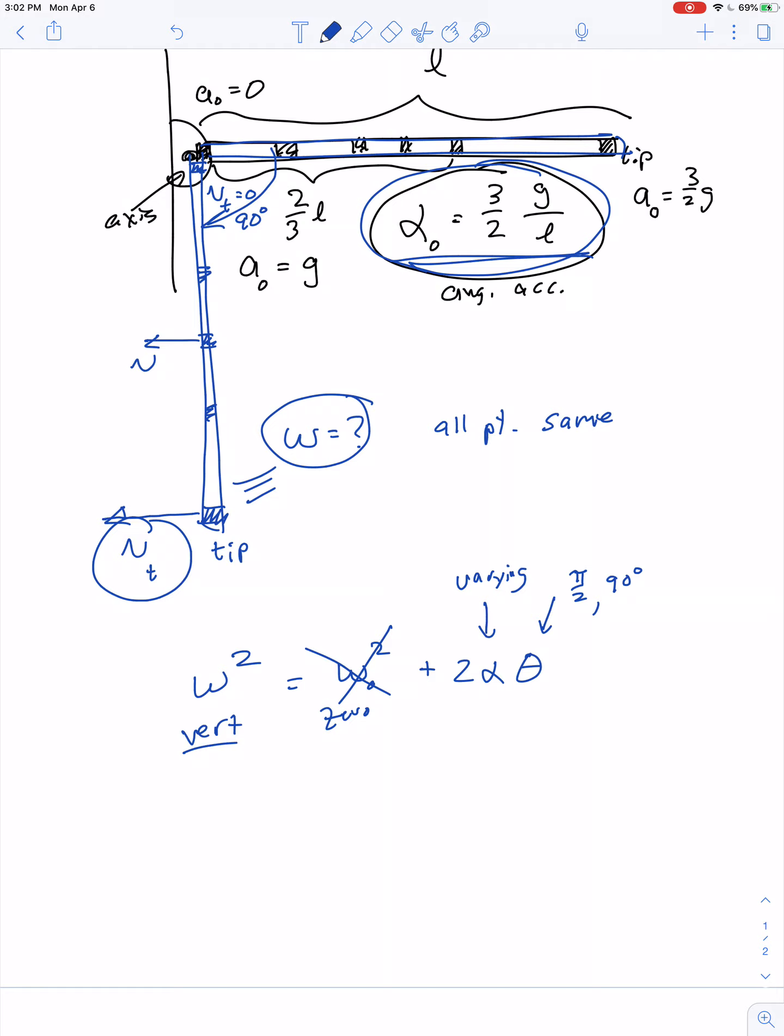But this angular acceleration varies. And I think I pointed out in the previous video, the reason that angular acceleration is varying isn't because the force varies or even that the lever arm varies. The force of gravity always pulls at the center of mass with a value of mg, and the lever arm is equal to L over 2.